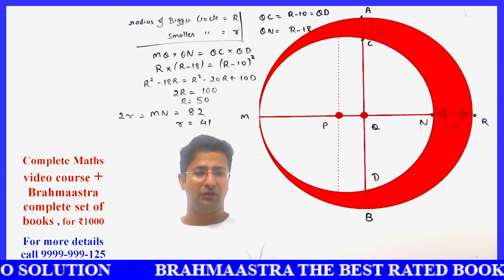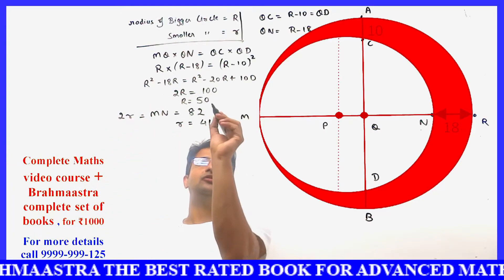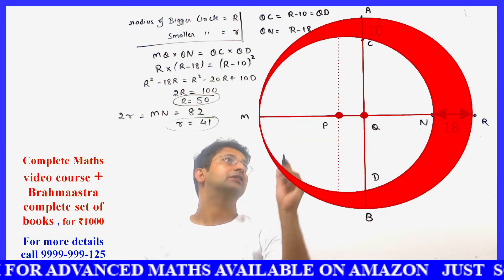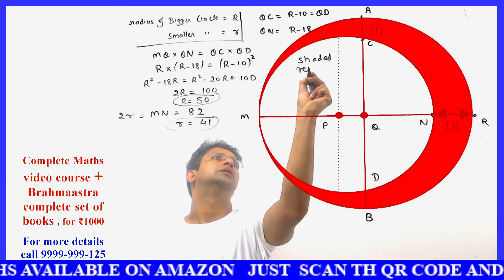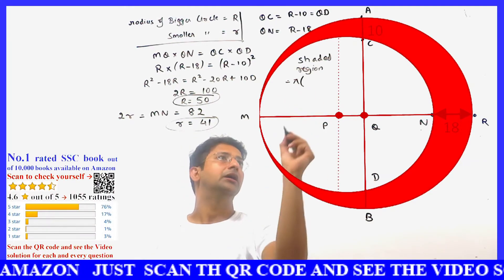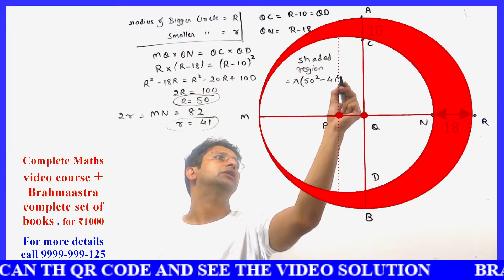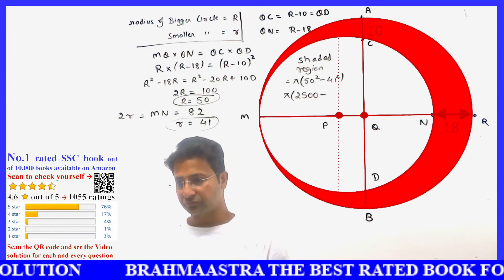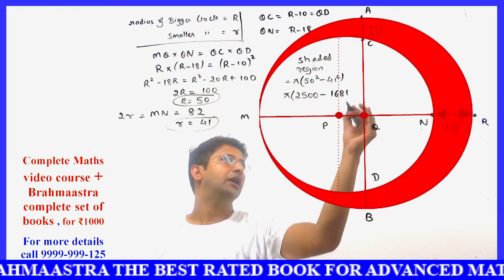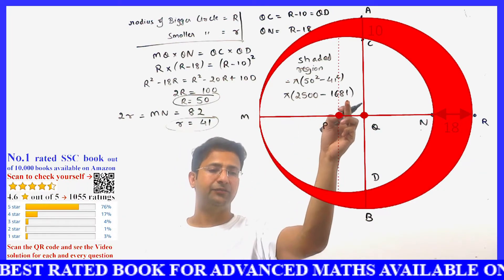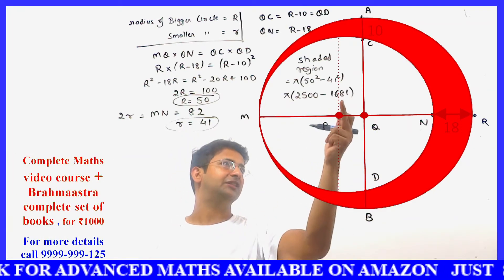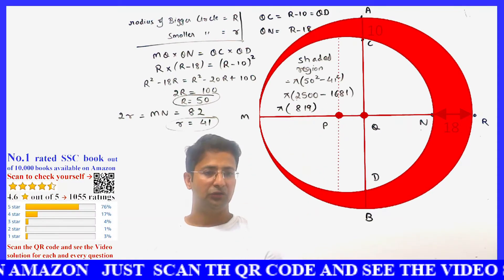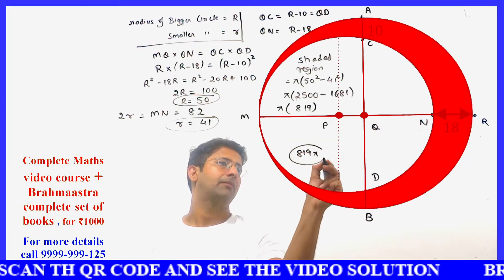We have capital R = 50 and small r = 41. The shaded region equals π times (50 squared minus 41 squared) = π times (2500 minus 1681) = π times 819. So the answer is 819π.